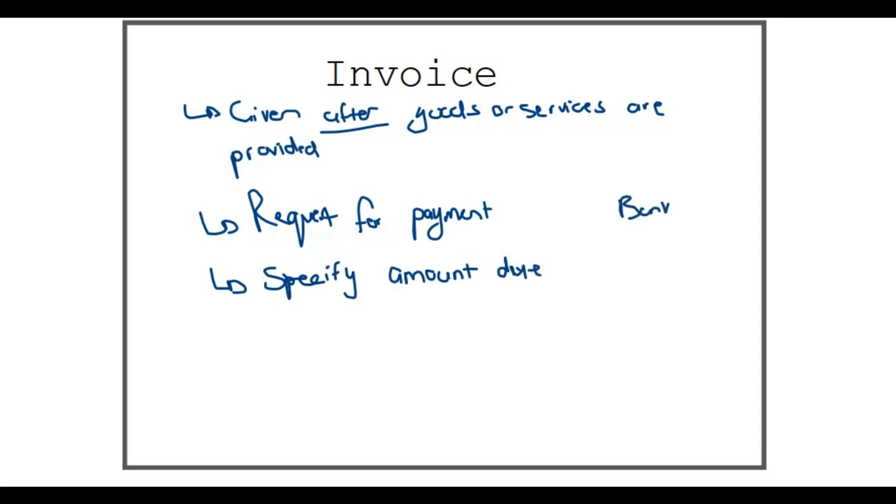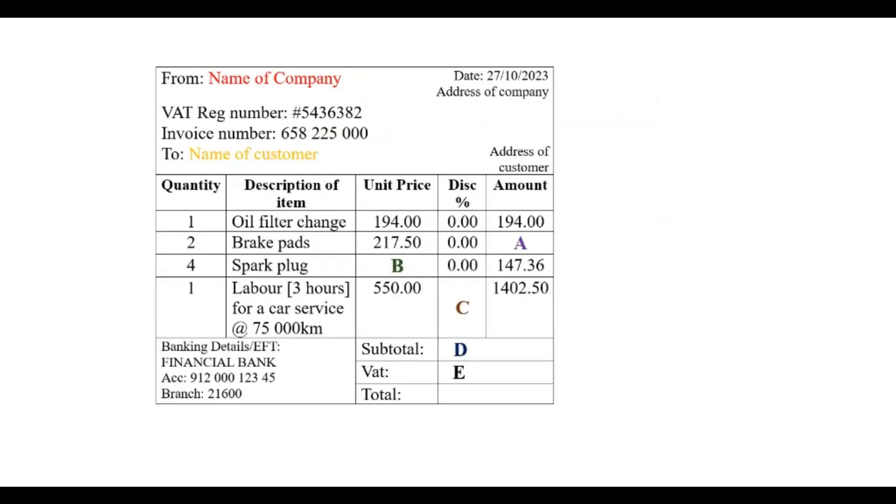Here is such a document. You will see the name of the company that's providing the services or goods, the VAT registration number - because they also have to pay VAT on their goods - every invoice has a unique number, and finally the name of the customer, so who we are giving this document to.